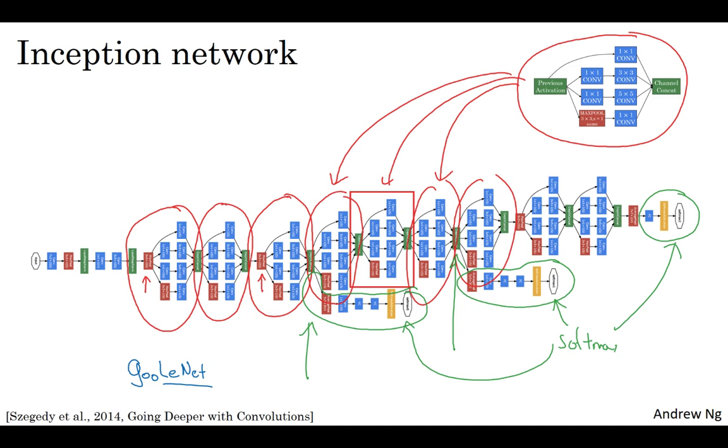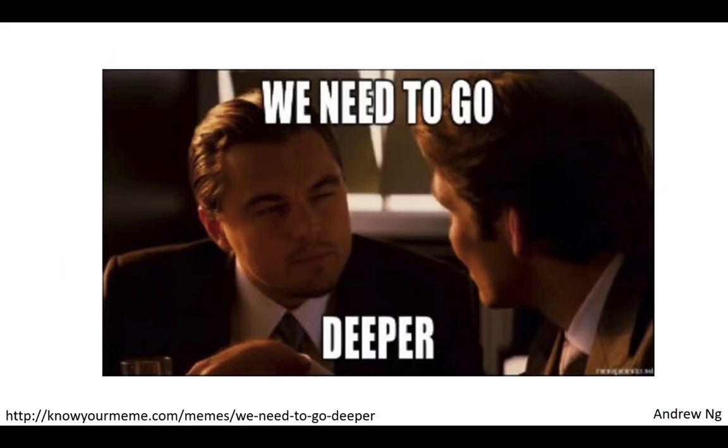Finally, here's one fun fact. Where does the name inception network come from? The inception paper actually cites this meme for we need to go deeper. And this URL is an actual reference in the inception paper, which links to this image. And if you've seen the movie titled The Inception, maybe this meme will make sense to you. But the authors actually cite this meme as motivation for needing to build deeper neural networks. And that's how they came up with the inception architecture. So I guess it's not often that research papers get to cite internet memes in their citations. But in this case, I guess it worked out quite well.